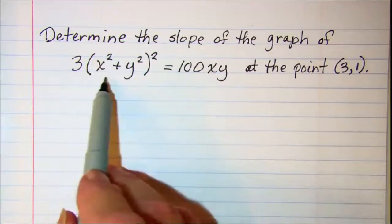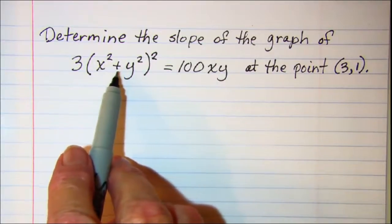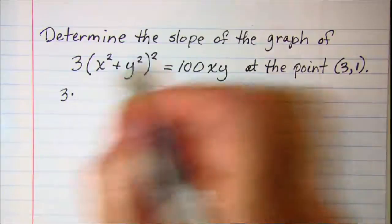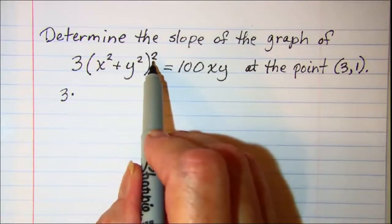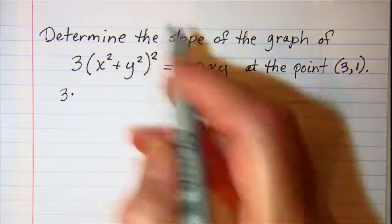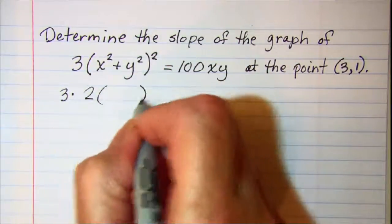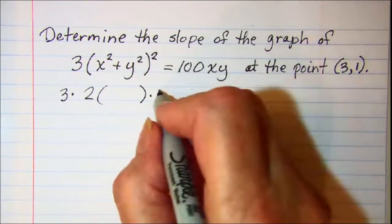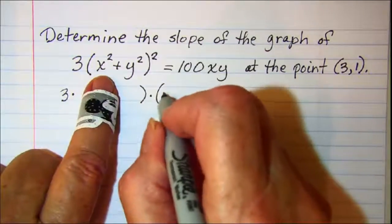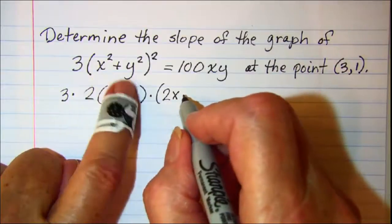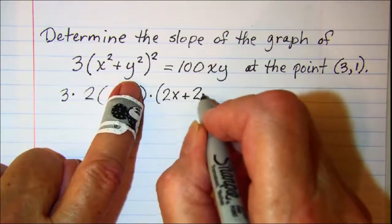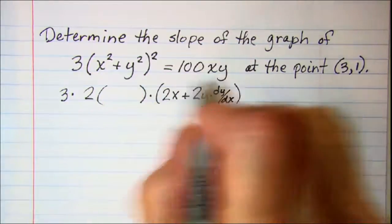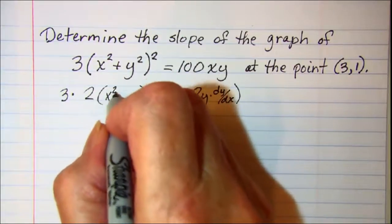So our derivative of this left side, this is a composite function. So I'm going to, it's going to be 3 and then the derivative of the outside function, since this is a quantity squared, will be 2 times that quantity to the first power and then times the derivative of the inside which will be 2x and I don't need the chain rule there. But on this one I have 2y and then dy dx and my inside part here is x squared plus y squared.